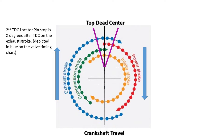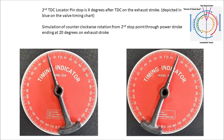Now let's move to the second stop point. The second top dead center pin stop is X degrees after top dead center on the exhaust stroke, depicted in blue on the valve timing chart. The simulation shows a counterclockwise rotation from the second stop point through the power stroke, depicted in red, ending at X degrees on the exhaust stroke, again depicted in blue. Transcribing that to the E25 timing indicator: counterclockwise rotation from the second stop point starting at 20 degrees before top dead center through the power stroke, ending at 20 degrees after top dead center on the exhaust stroke.